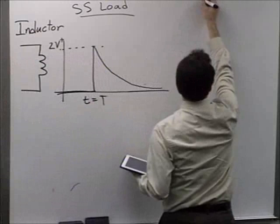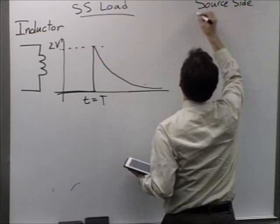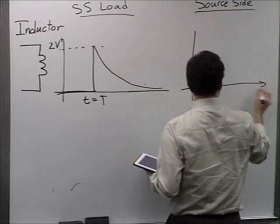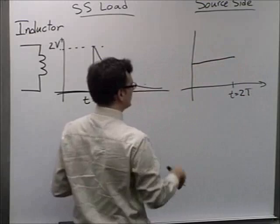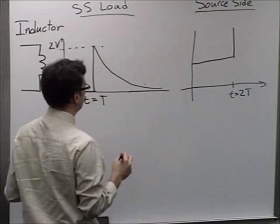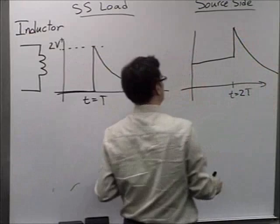At the source side, I see an initial voltage sent down the line. It gets to the end and starts to look like an open circuit, so it jumps up. But over time, with the same exponential decay, it goes down and looks like a short circuit.